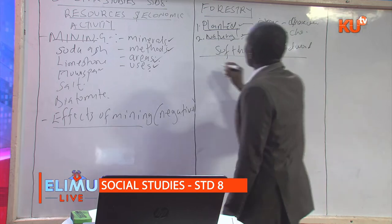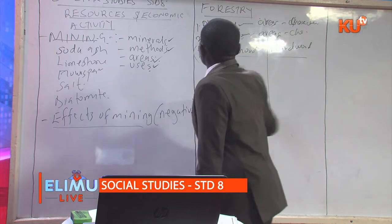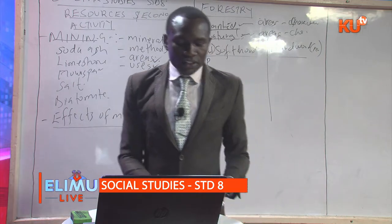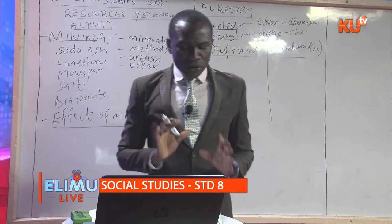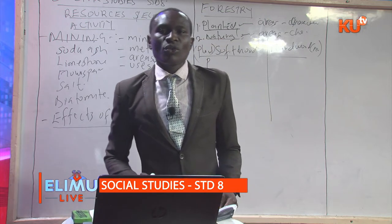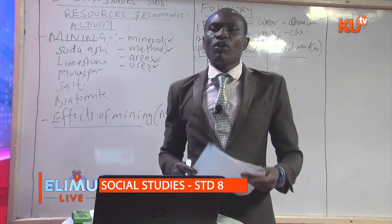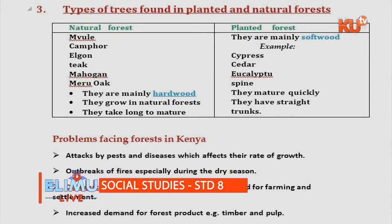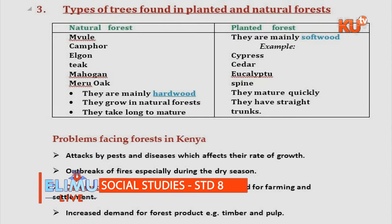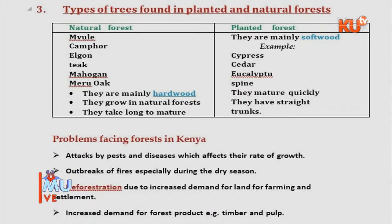Let us look at types of trees found in the planted and natural forest. In the natural forest, we have trees such as Muvule, Camphor, Mahogany, Meru Oak, Elgon Teak — these are the hardwood trees. In planted forest, they are mostly softwood. We have Cyprus, Cedar, Eucalyptus, and Pine.